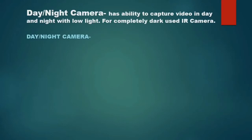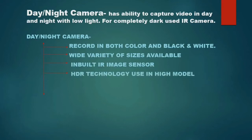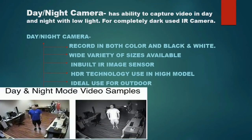We have the day and night camera. The day and night camera has the ability to capture videos during the day and at night with low light — in fact, even in complete darkness. It uses an IR sensor, so it is an IR camera. It also works with motion sensors. One of the major features is that it records in both color and black and white. It has a wide variety of sizes available, an inbuilt IR image sensor, and uses high definition technology in higher models.